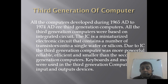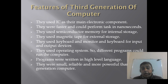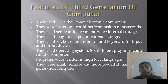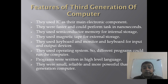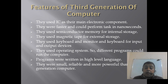Keyboard and mouse were used in the third generation of computers as input and output devices. The features of third generation computers: they used ICs as their main electronic components; they were faster and could perform tasks in nanoseconds; they used semiconductor memory for internal storage and magnetic tape for external storage; they used keyboard and monitor for input and output; they used operating systems so different programs could run; programs were written in high level language; they were small, reliable and more powerful than second generation computers.